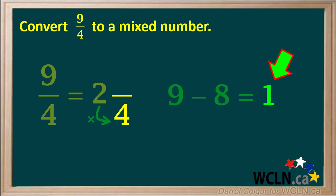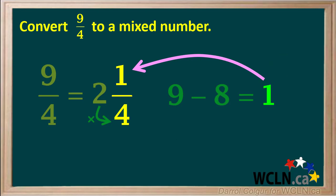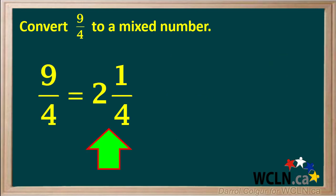This 1 becomes the numerator of our remainder fraction. And our final answer is the improper fraction 9 over 4 converted to the mixed number 2 and 1 quarter. The procedure of finding the remainder — 1 quarter in this case — can often be done in your head.